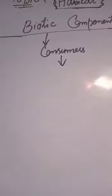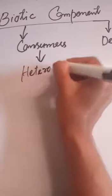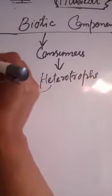Consumers. Consumers, these are also called heterotrophs, because they cannot prepare their own food. They depend upon these producers.